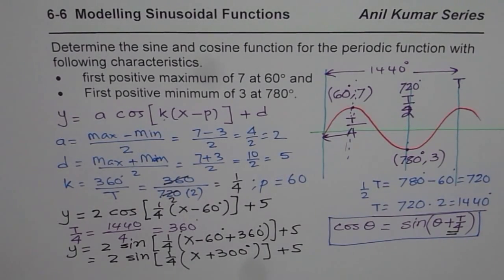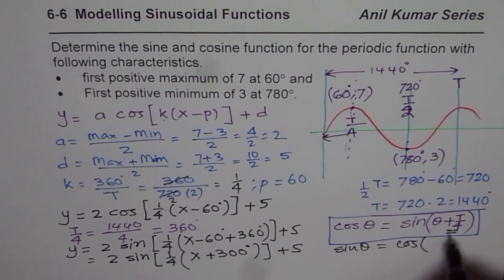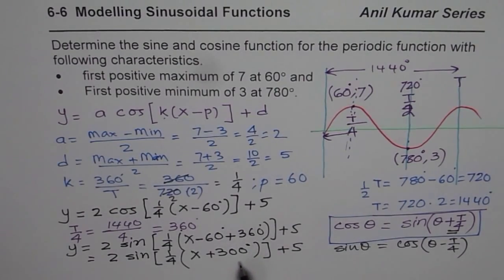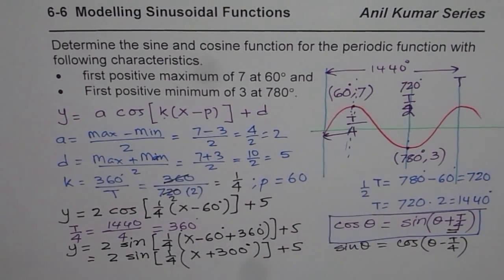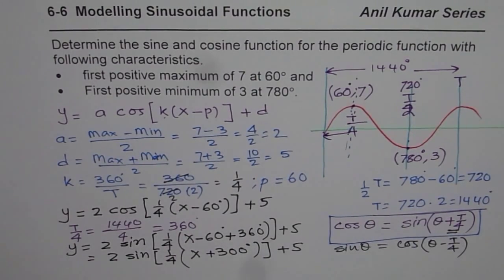If you are given an equation in sine and need to write it in cosine, subtract a quarter cycle from the phase shift and you get your equation. To verify your answer, plug in the given points: x = 60° should give y = 7, and x = 780° should give y = 3. It takes a minute with a calculator, so go ahead and check your answer.